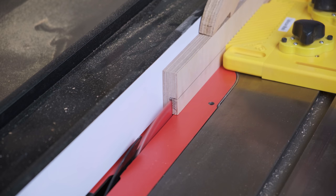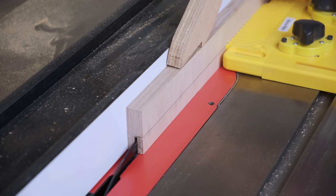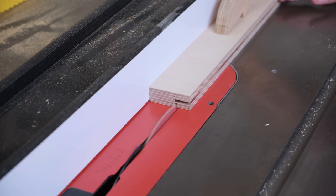Remember that offcut at the beginning I said would become a fence? That receives a rebate in the form of two regular cuts for some T-Track.